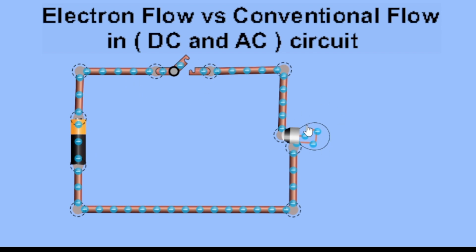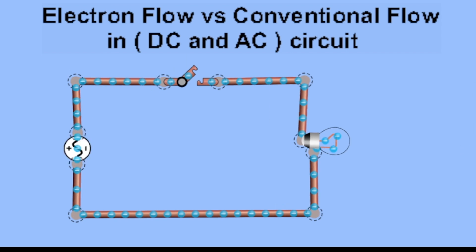a switch, and a lamp. This is our open circuit DC. For our second figure we have the AC circuit — as a source we have a generator, a conductor, a switch, and a lamp. The blue color you can see represents the electron, since we're going to discuss electron flow and conventional flow of current.